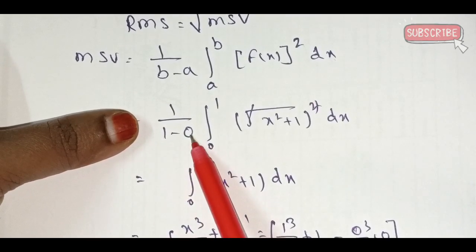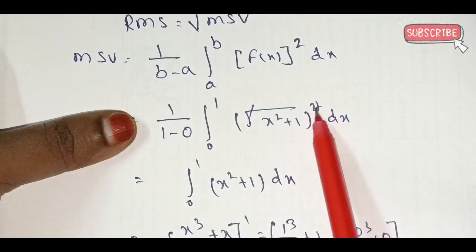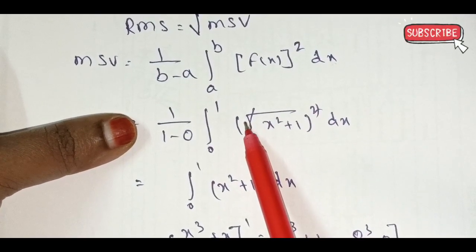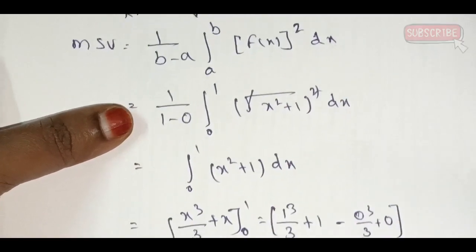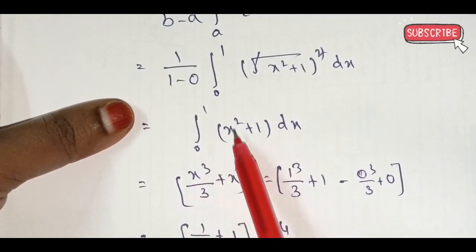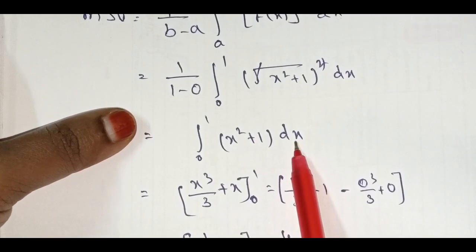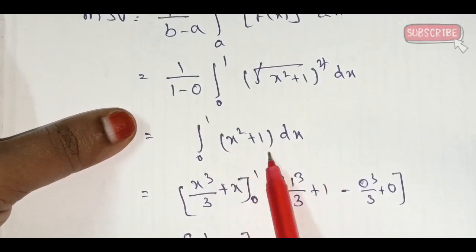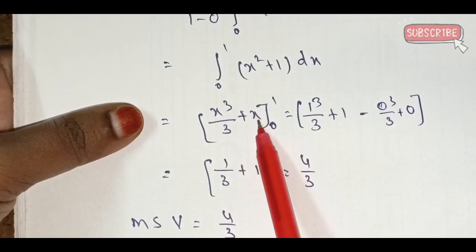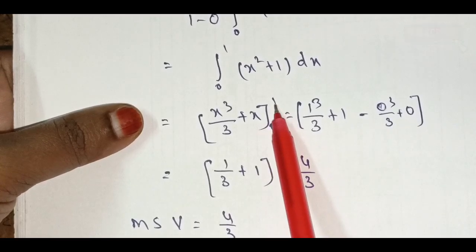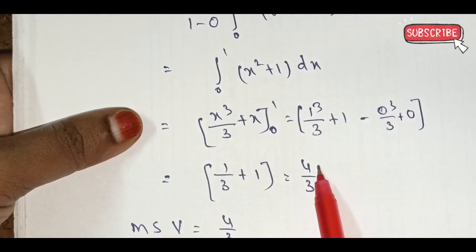With b = 1 and a = 0, we get 1 by (1 minus 0), integral from 0 to 1 of (√(x² + 1))² dx — the square and square root cancel. So integral from 0 to 1 of (x² + 1) dx. Integrating gives x³/3 + x from 0 to 1. Upper limit minus lower limit gives 1/3 + 1 = 4/3.